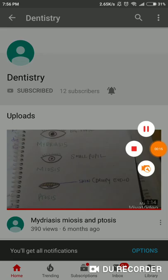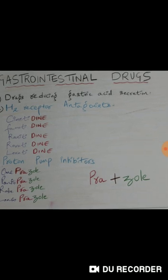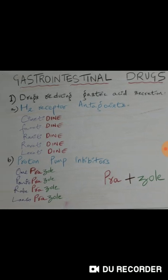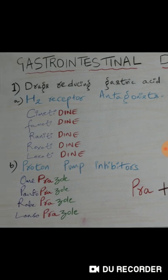Today I will be talking about mnemonics for gastrointestinal drugs. Under the heading gastrointestinal drugs, number one we have drugs which reduce gastric acid secretion. The first subcategory is H2 receptor antagonists — wherever you see 'dyne,' it is an H2 receptor antagonist.